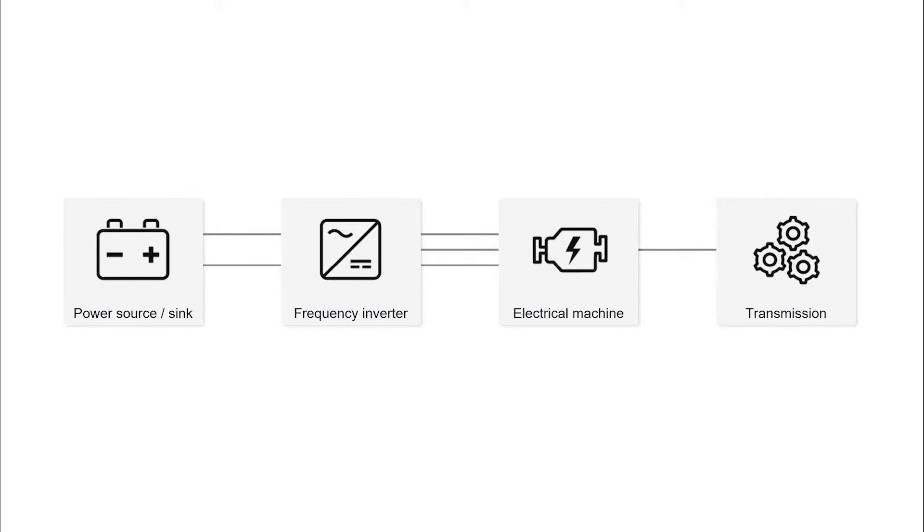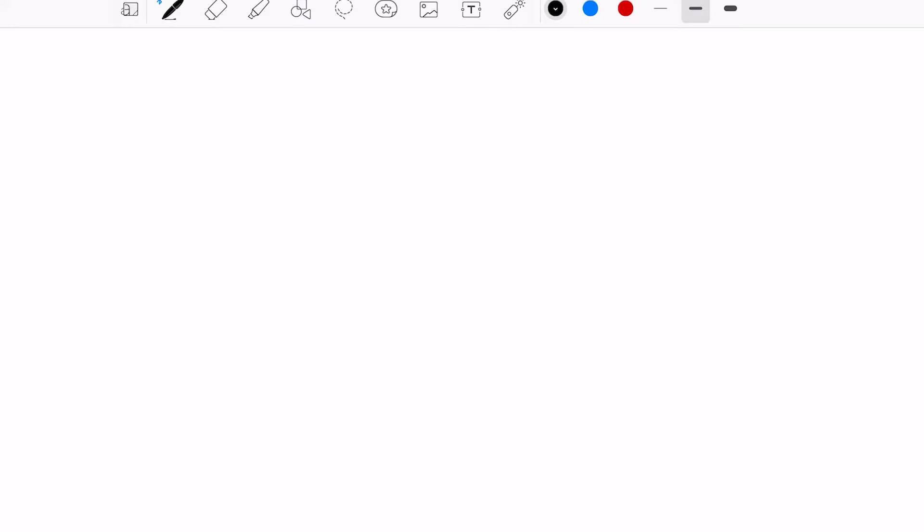I like to explain this with two formulas. So the problem is we don't have a cosine phi with which we can calculate the active power because the signals are not sinusoidal. But we measure anyhow a voltage at every time and the current at every time, and from both we can calculate the instantaneous power.